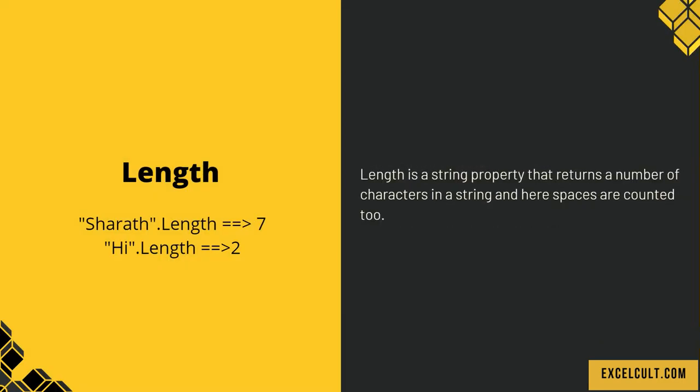Then we have length. Length is a string property that returns the number of characters in a string, and here spaces are counted too. As we can see in the examples, 'Sherath'.length gives the count 7 because there are seven characters in this string. Then 'hi'.length will give me 2.